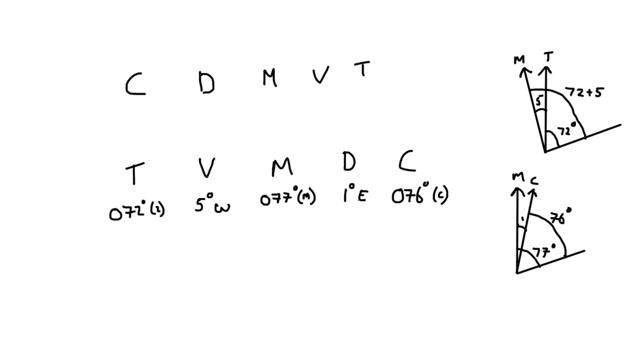Again, the same sort of acronym can apply or mnemonic or whatever you want to call it. Deviation east, compass least. So in this time, we're still moving this way. So we're referencing the compass. Deviation east, compass least. So compass is less than magnetic. That's exactly what we've done. It goes the other way as well. So if the deviation is west, the compass is best. So you'd have to add it on.